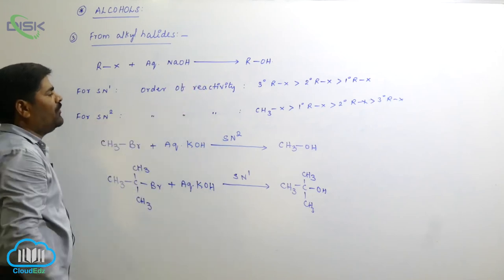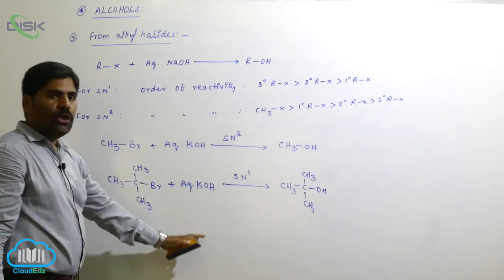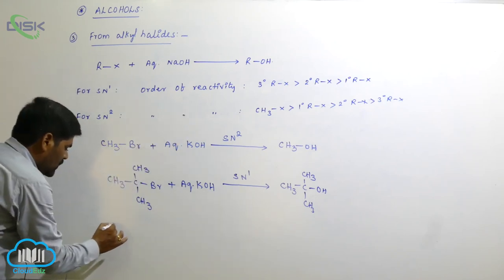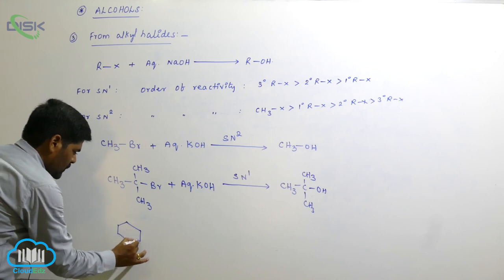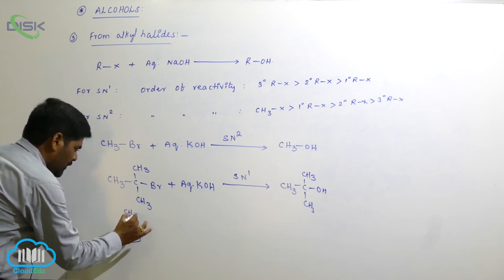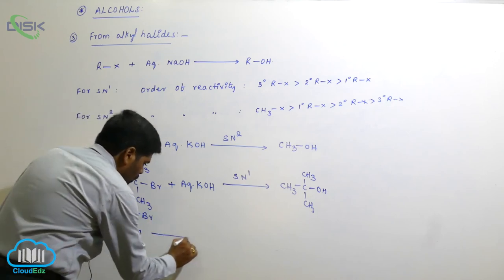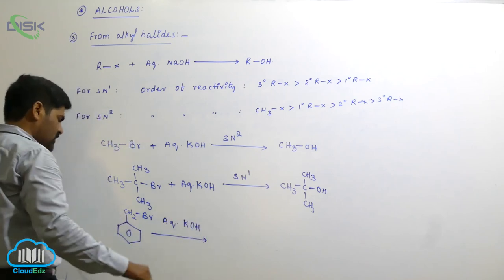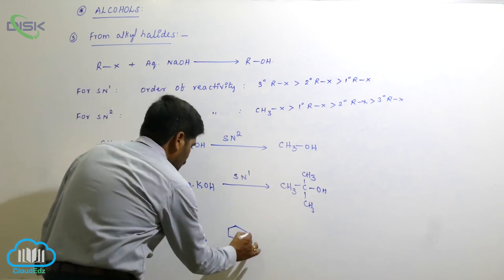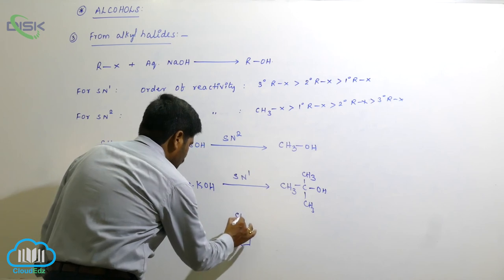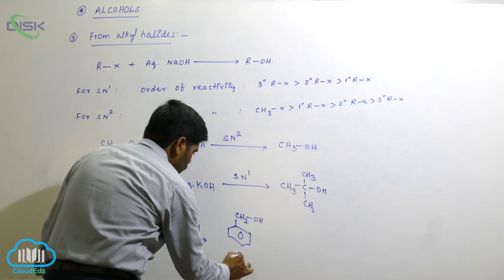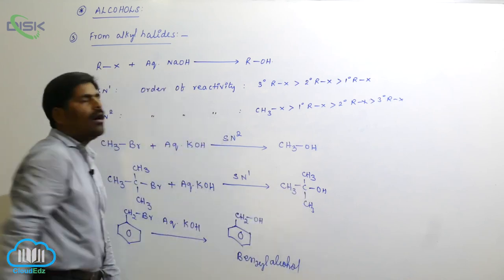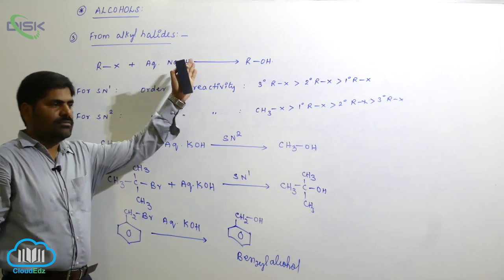For another example, benzyl bromide reacted with aqueous potassium hydroxide preferentially follows the SN1 mechanism, and the product is benzyl alcohol. This concludes the third preparative method for alcohols from alkyl halides.